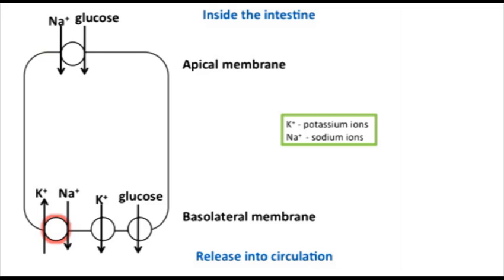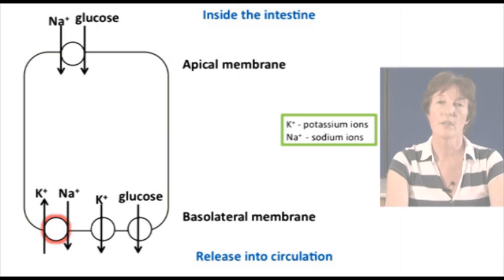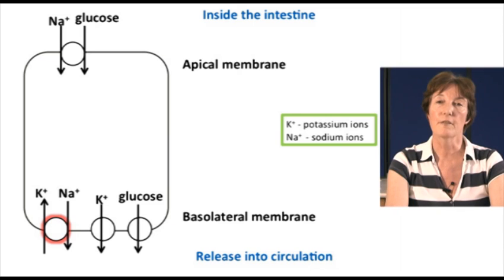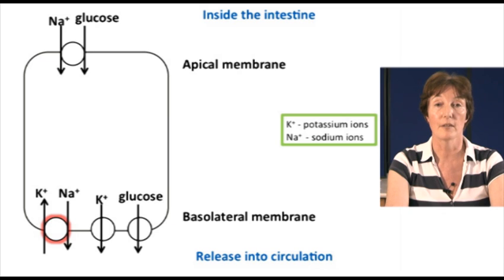Here you can see some of the transporter proteins present in the enterocyte cell membranes. You will notice that there are different transporters on the apical and basolateral surfaces. Not all the transporters are shown, as there are a large number of different transporters.